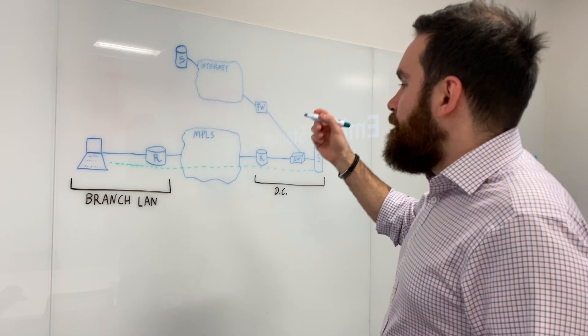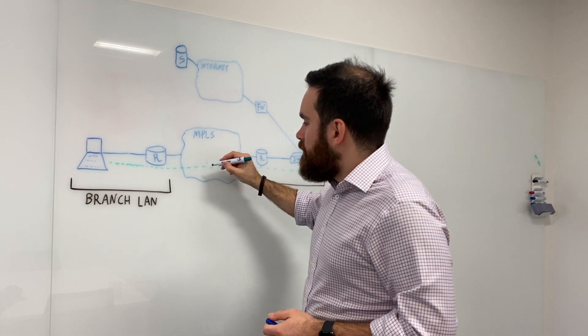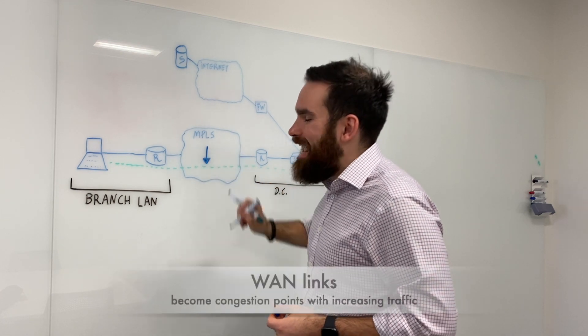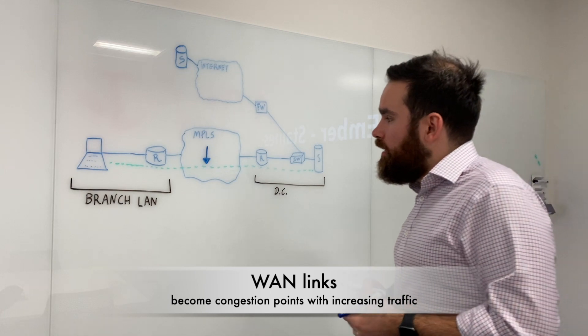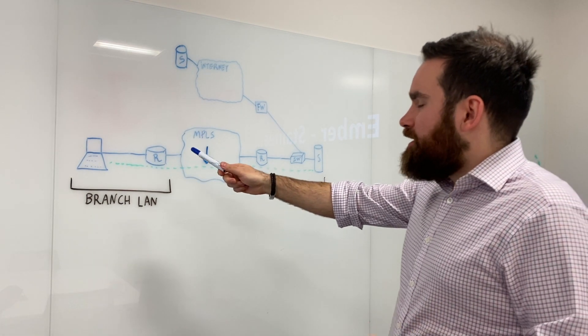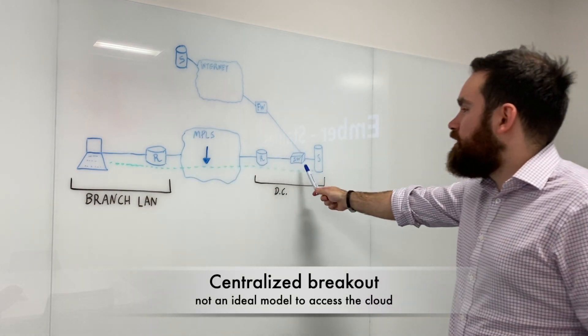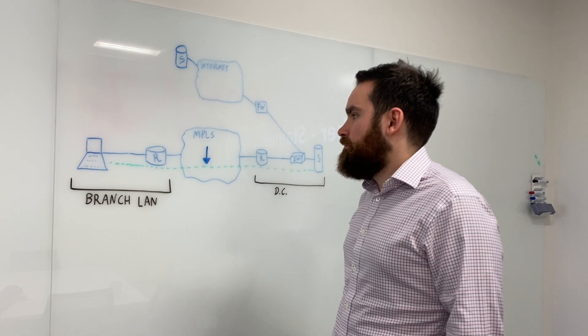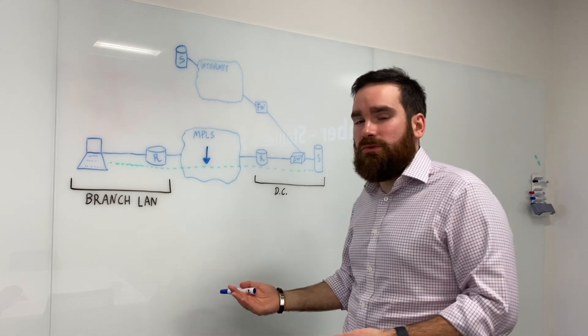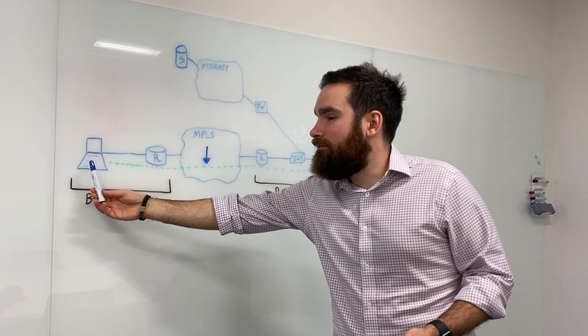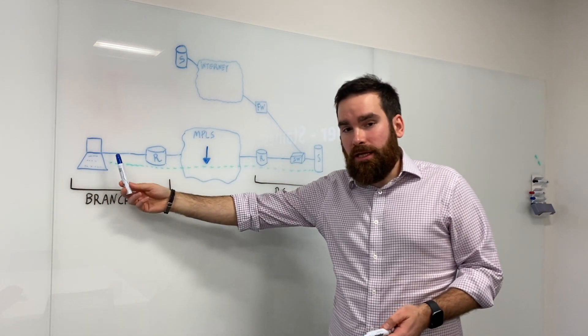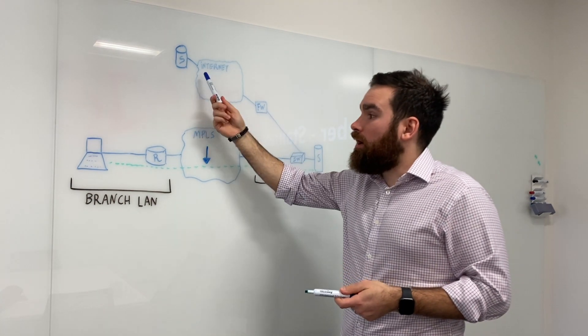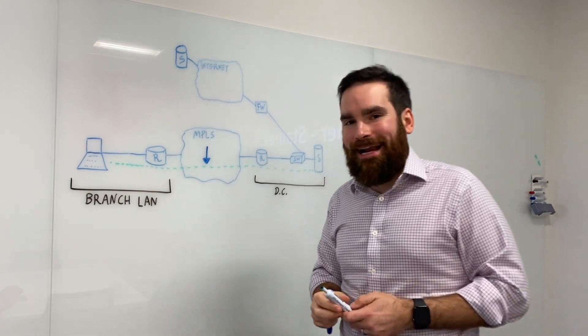So as you start understanding that this place here, the link between the branches and the data center becomes a congestion point. Also, if you look at this, it's not particularly optimal to travel from the branch into the data center, have a centralized breakout and then go to the internet. Same for the guests and same for the non-business critical traffic. Why do I need to traverse this small pipe that gets congested or to come back all the way to the data center and break out locally, potentially going back to where I started?